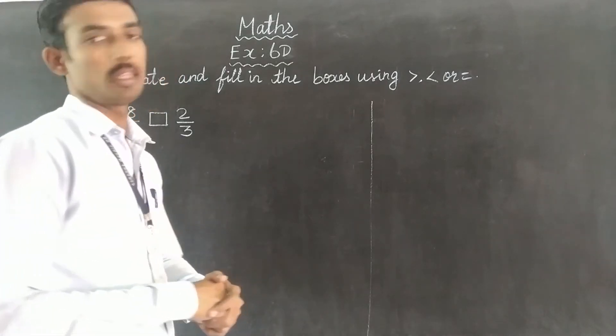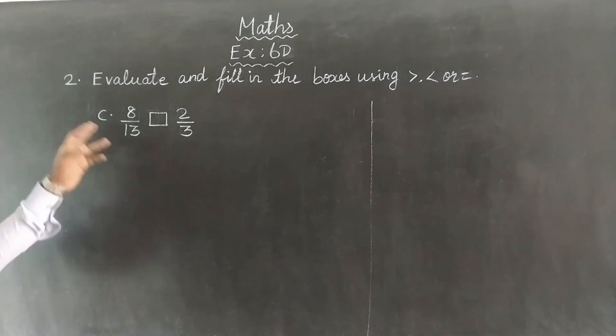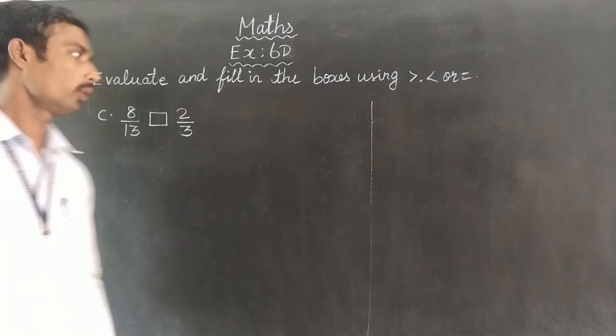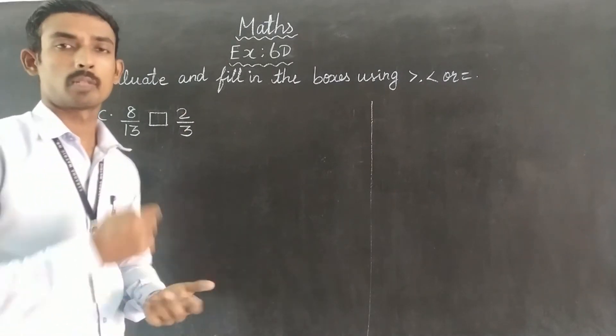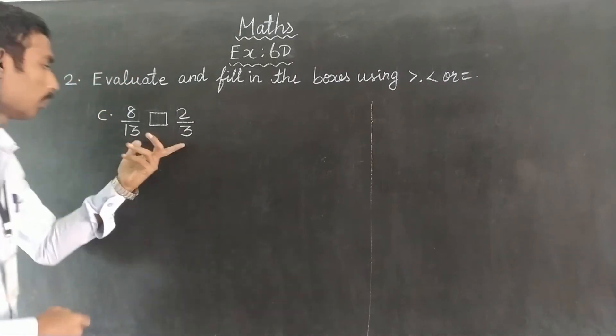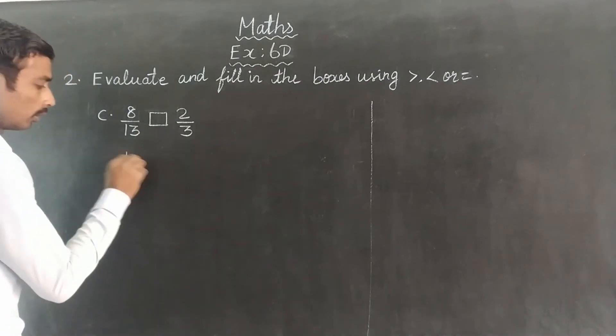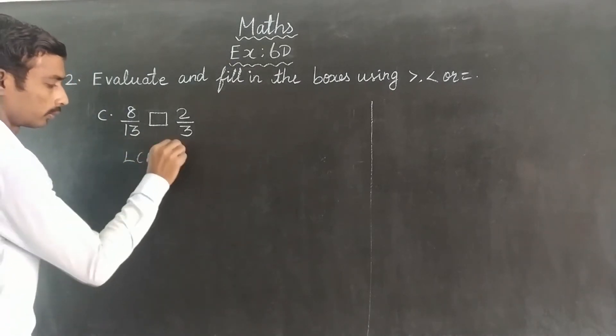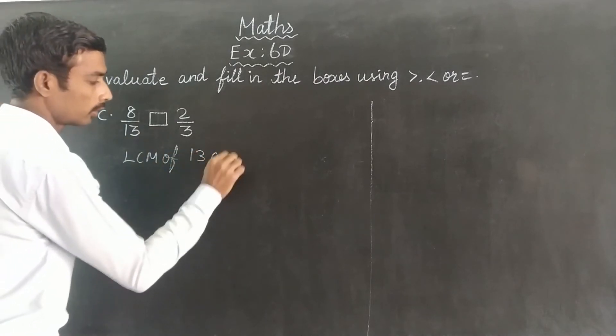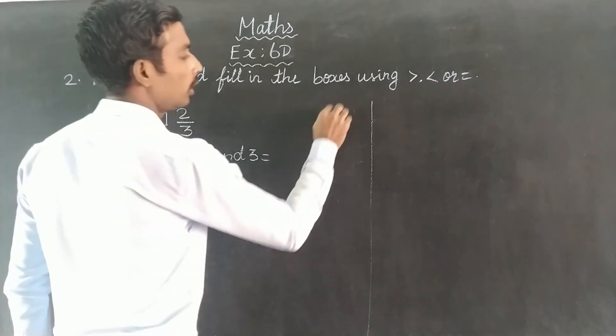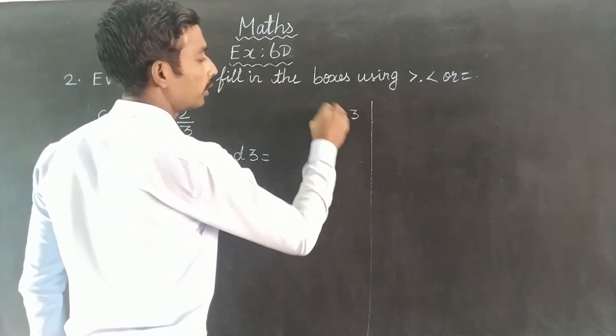Less than or equal. Now we are going to talk about C: 8/13 and 2/3. So we are going to talk about the denominators. We are going to find the LCM of 13 and 3.